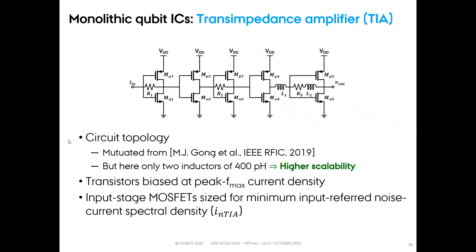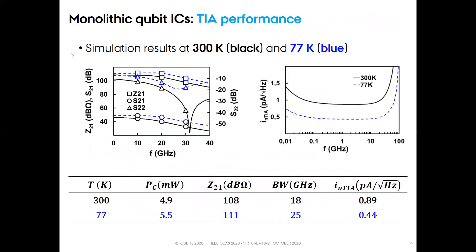The circuit topology of the transimpedance amplifier was adapted from a design by the University of Toronto, which is one of the members of the iQubits Consortium, but in this case we consider only two inductors instead of three for improved scalability. All transistors are biased at the peak fmax current density and the input stage MOSFETs are sized for minimum input-referred noise current spectral density INTIA. These plots report the simulation results at 300 Kelvin in black and 77 Kelvin in blue, reporting the parameters Z21, S21, S11, S22, and INTIA. At 300 Kelvin the TIA achieves a Z21 of 108 dB-ohm, meeting the performance requirements, and exhibits wide bandwidth and low noise with a small power consumption of 4.9 mW. At 77 Kelvin, the gain, bandwidth, and noise performance improve despite a slight increase in power consumption.